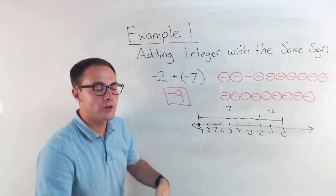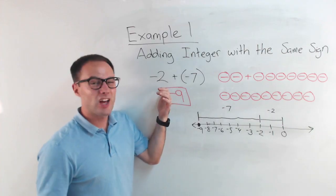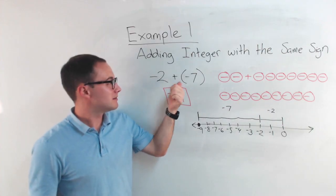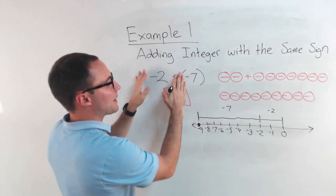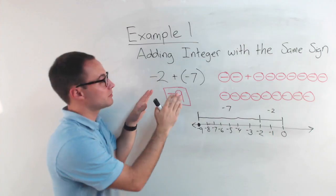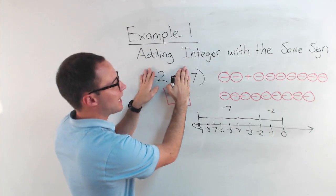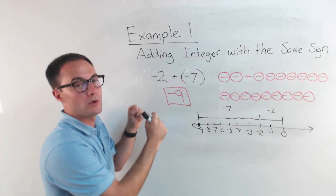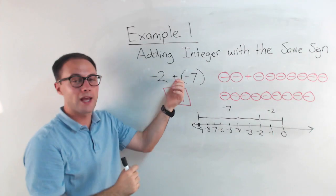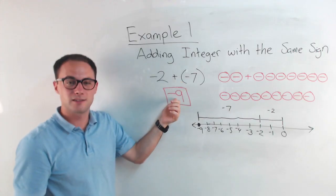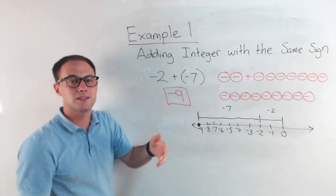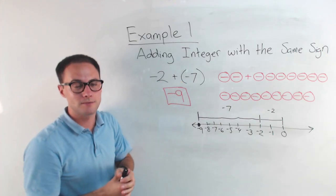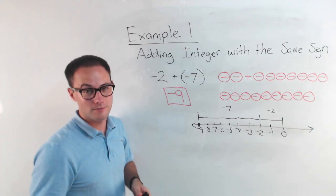Hopefully you'll start to realize all you really need to do is add the absolute value — basically just add the digits. And then if both were negative, your answer is going to be negative. If both were positive, your answer is going to be positive. Here's something to try on your own.